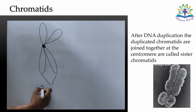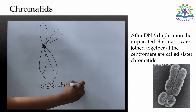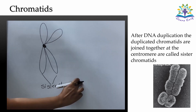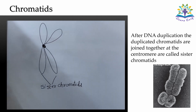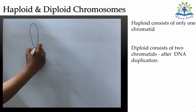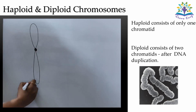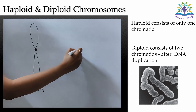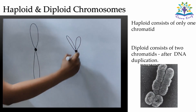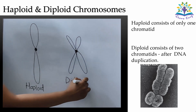After DNA duplication, the duplicated chromatids are joined together at the centromere and are called sister chromatids. Please note that the number of chromosomes is counted on the basis of centromere and not on the basis of chromatid, so the chromosome number will remain the same before and after DNA duplication. Haploid consists of only one chromatid and is present before DNA duplication; diploid consists of two chromatids and is present after DNA duplication.